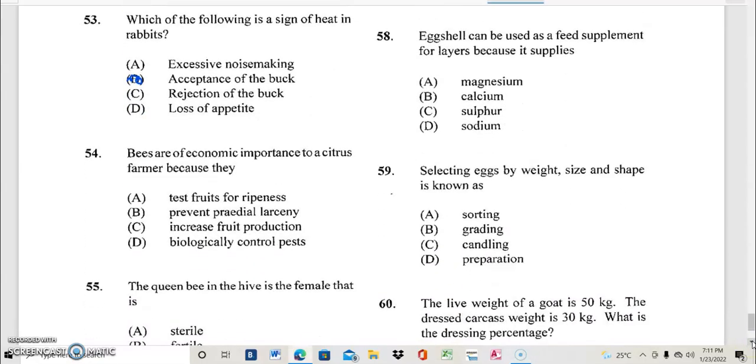Question 54. Bees are of economic importance to a citrus farmer because they? What do you think the answer is for question 54? Because they? Very good. If your answer is C, they increase fruit production, you are very much correct.